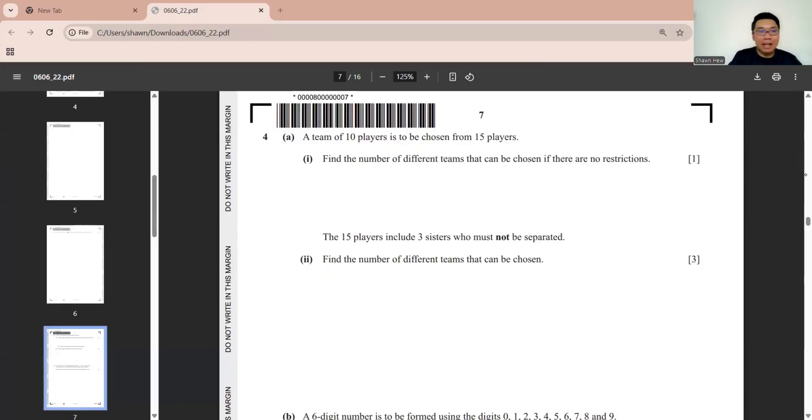Question 4 is permutation and combination. They say a team of 10 players is chosen from 15 players. Find the numbers of different teams that can be chosen if there is no restriction. So obviously, this is combination. 15C10 equals 3003. Then they say the 15 players include 3 sisters who must not be separated. So this is the special candidate situation. If the 3 sisters will separate them out, then the balance 12 people will consider later. It must not be separated means either the 3 sisters, we choose all 3 of them, or we do not pick all 3 of them. If we already have this 3 sisters, I want 10 people. I already picked 3 of them. I still need 7 more people. So it's C7. This C7, we can choose only from the balance people. So it's 12C7. If I do not choose these 3 sisters, I still need 10 people. So it's C10. These 10 people also choose from the balance 12 people. Done.